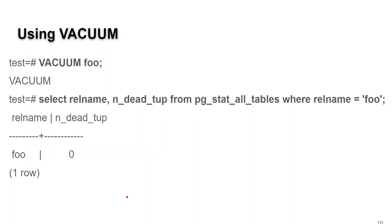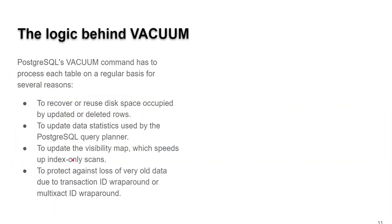Using vacuum is real simple. We type in vacuum foo — the name of the table. And now if we go back and check for the number of dead tuples, we'll find out it's been reduced to zero.